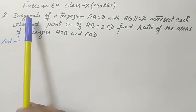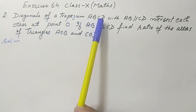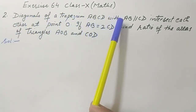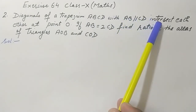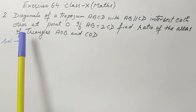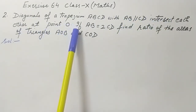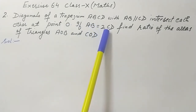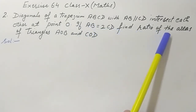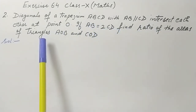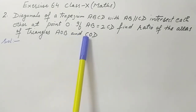The question is: the diagonals of a trapezium ABCD with AB parallel to CD intersect each other at point O. If AB is equal to double of CD, find the ratio of the areas of triangles AOB and COD.